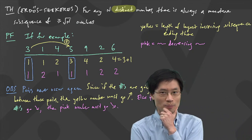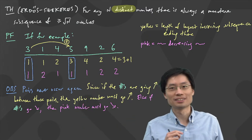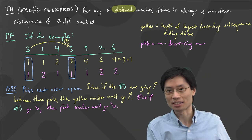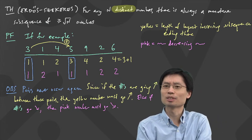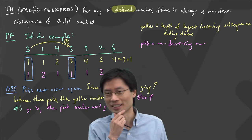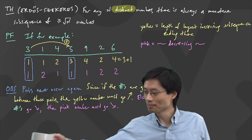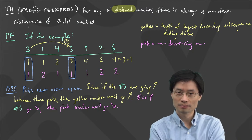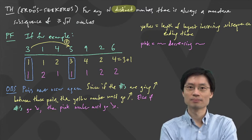I have now proved that these blue pairs never repeat — you never get the same pair again. How is this relevant? I claim we're now very, very close to proving the Erdős–Szekeres theorem. We need to find there's always a monotone subsequence of at least square root of n. And what I know now is that all of these pairs are different. We can use some pigeonhole. If we assume for contradiction that there is not going to be anything bigger, we count the number of distinct pairs, and it's going to be less than n — which is a contradiction.